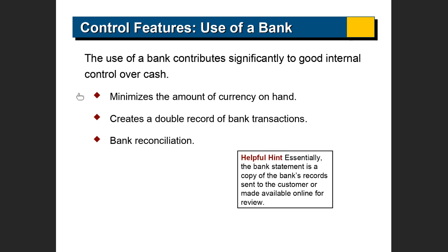The problem is that the timing of these transactions sometimes don't fall in the same accounting period. For example, if you write someone a check on the 30th of November and they don't cash it that same day, you've subtracted the amount from your company books, but the bank records that subtraction in the following month. So when you get the bank statement at the end of the month, it will not match.